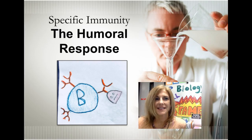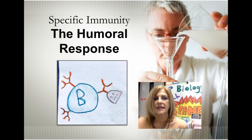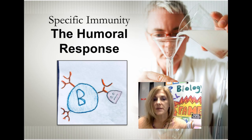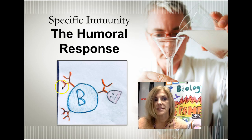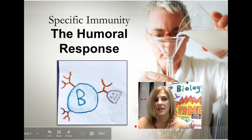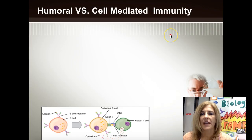Welcome back anatomy students. Today we're going to continue our discussion of specific immunity, focusing on the humoral response in particular. Humoral means normal bodily fluids, so the humoral response occurs in the lymph and the blood and it deals with B cells. Here is a B cell with some receptors finding a pathogen — that's the humoral response.